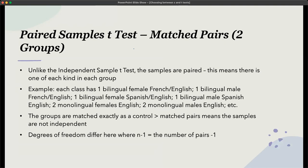Two monolingual females and two monolingual males. So you're looking at making sure that each of the classes match based on whichever variables you're interested in. The groups are matched exactly, and this is a control. So the matched pairs means the samples are not independent. And the degrees of freedom differ here, where n minus one is the number of pairs minus one.